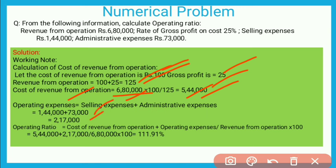Operating Ratio = (Cost of Revenue from Operations + Operating Expenses) / Revenue from Operations × 100 = (5,44,000 + 2,17,000) / 6,80,000 × 100 = 7,61,000 / 6,80,000 × 100 = 111.91%. यह 100 से भी ज़्यादा आ गया — इसका मतलब operating ratio काफी ज़्यादा हो गई — इस case में loss हो गया। तो operating profit की जगह operating loss आएगा।